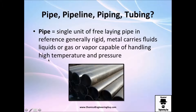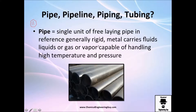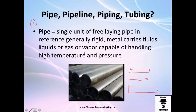A pipe is a single unit — generally a rigid metal cylinder that carries fluids, liquids, or gases. You can have a small pipe or a big pipe, and they must be able to contain high temperatures and high pressures.